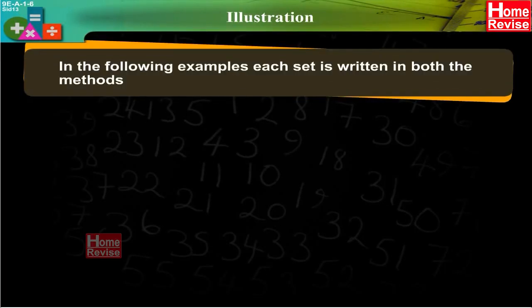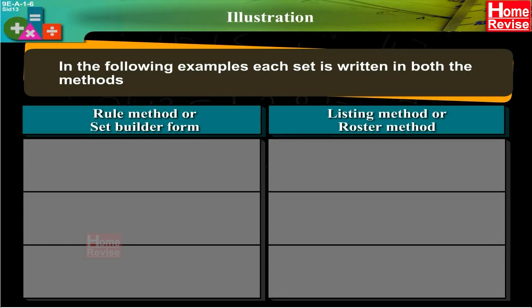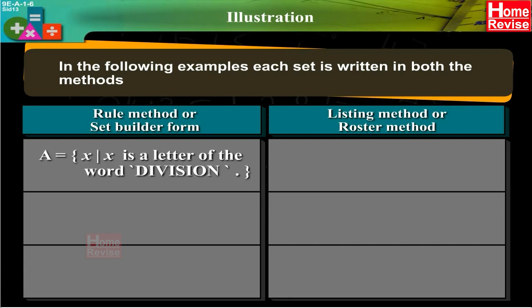Illustration: In the following examples, each set is written in both methods — rule method (set builder form) and listing method (roster method). In set builder form: A = {x : x is a letter of the word 'division'}. In roster form: A = {d, i, v, s, o, n}.